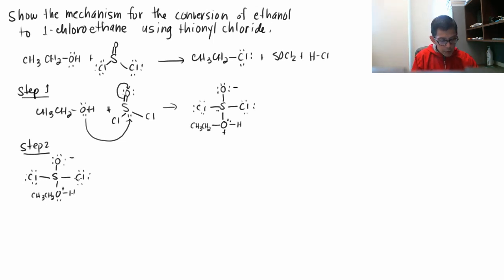This is what happens. So oxygen is not happy being positively charged. What happens next is this third lone pair on the oxygen reforms the double bond between the oxygen and the sulfur and what happens is that bond between the sulfur and the chlorine gets broken.